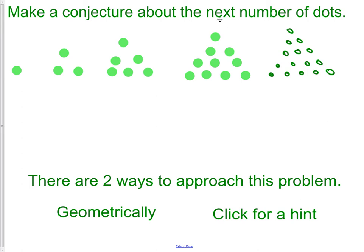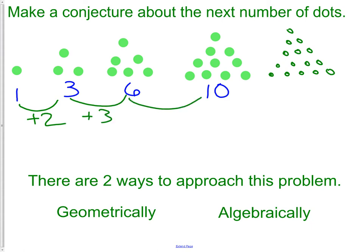We could also do this problem algebraically. That is more like mathematically. We have one, then we have three, then we have six, so on and so forth. So we see we're going by two, then we're going by three, then we're going by four. So when we say we're doing it algebraically, we look at the patterns of what's happening. We gain two, we gain three, we gain four. So our conjecture would be we're going to gain five for the next one, which would put us at 15. And that is actually the correct next term or next picture.